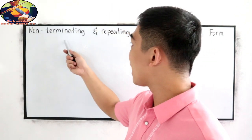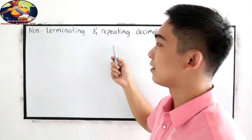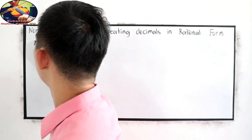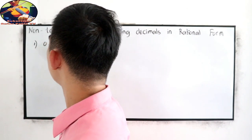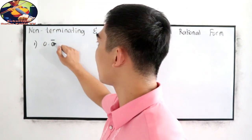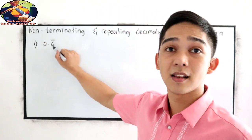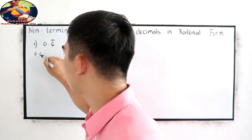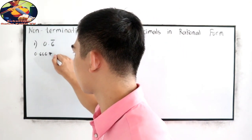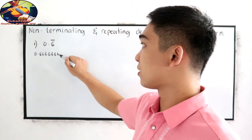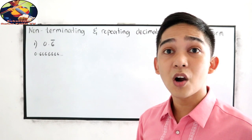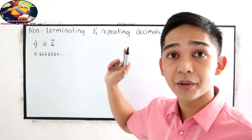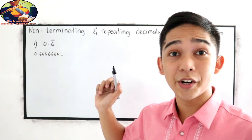Non-terminating and repeating. Our first example is 0.6 bar, which is equivalent to 0.666666 and so on. So how are we going to write 0.6 bar into rational form? Let me teach you our shortcut.